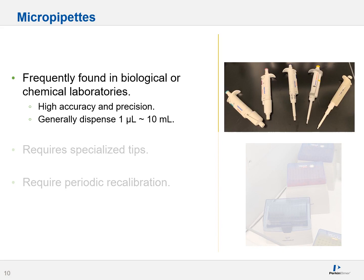Micropipets are arguably one of the more common pipets used in the lab environment. They are frequently found in biological or chemical laboratories — anything from DNA synthesis to ICP-MS preparation. If calibrated, they are extremely accurate and precise, and generally dispense between one microliter to 10 milliliters.